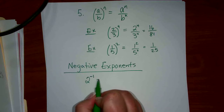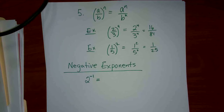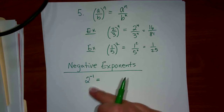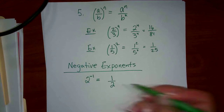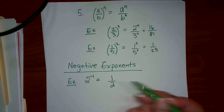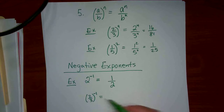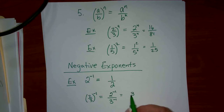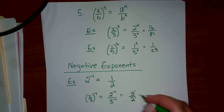So say we had a negative exponent. A negative exponent means divide instead. So 2 to the negative 1 means divide by 2 instead of multiply by 2 — this is equal to 1 over 2. Now if we had something like 2 thirds to the negative 1, this is 2 to the negative 1 over 3 to the negative 1. Basically it means if it's on the bottom with a negative exponent you move it to the top, and if it's on the top with a negative exponent you move it to the bottom.